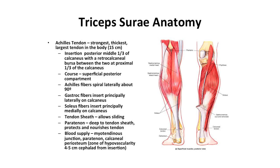Anatomy of the triceps surae. The Achilles tendon is the strongest, thickest, largest tendon in the body, approximately 15 centimeters in length. It inserts into the posterior middle one-third of the calcaneus, with a retrocalcaneal bursa between the two at the proximal one-third of the calcaneus. The core is the superficial posterior compartment. The Achilles fibers spiral laterally about 90 degrees — gastroc fibers insert principally on the lateral aspect and soleus fibers on the medial aspect. There is a zone of hypovascularity approximately 4 to 5 centimeters cephalad from the insertion, a common area for Achilles tendon ruptures.